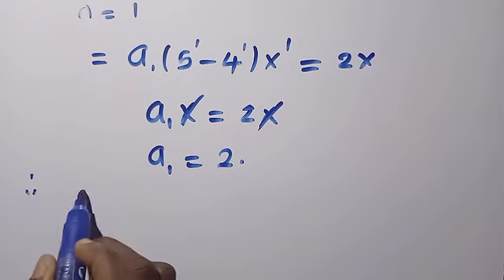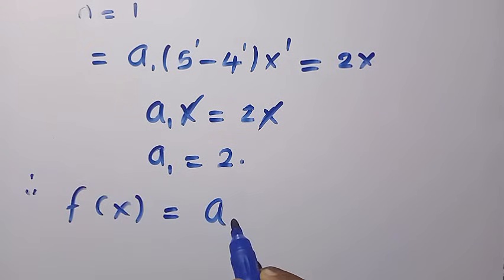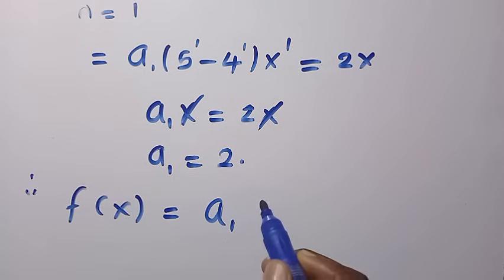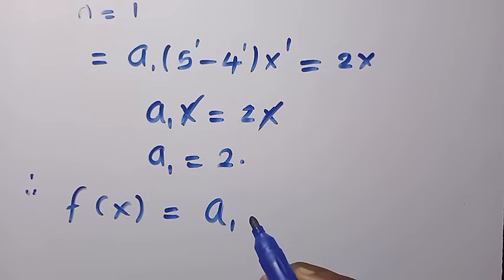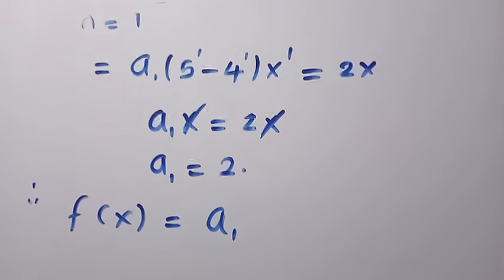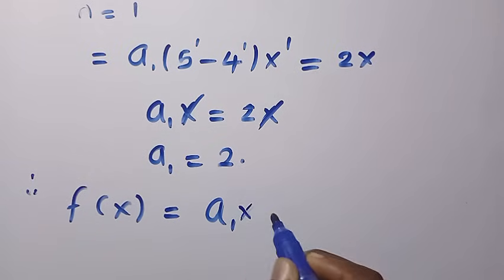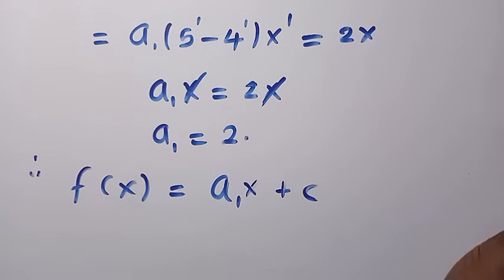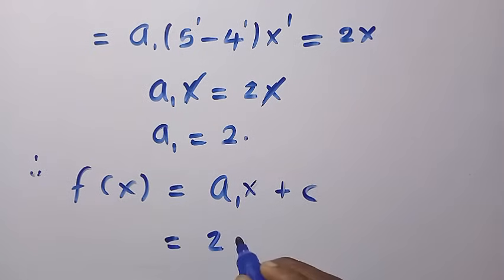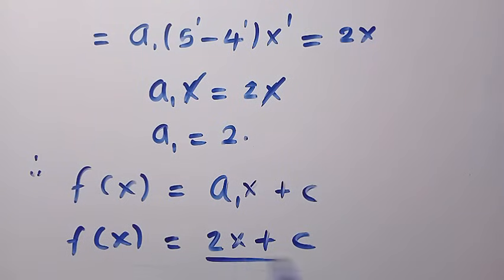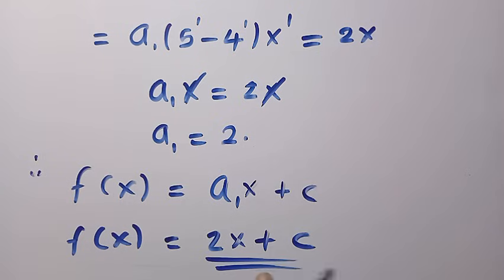Since a_1 equals 2 and we stop at degree 1, f(x) equals a_1 x^1 plus a constant c. Replacing a_1 with 2 gives f(x) equals 2x plus c. This is the general form when the right-hand side is a linear function.